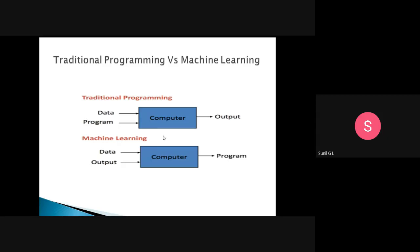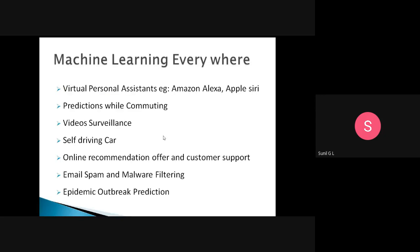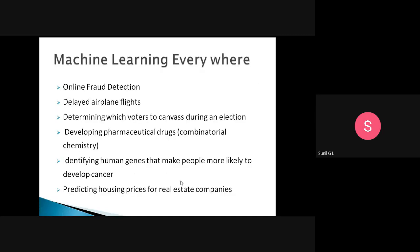All those things were discussed in the previous class — just revising. Machine learning is everywhere: virtual personal assistants like Amazon Alexa and Apple Siri, prediction while computing, predicting traffic signals, video surveillance — by capturing the behavior of a person we can identify what they may do in future — self-driving cars, recognition systems, customer support, and email spam and malware filtering.